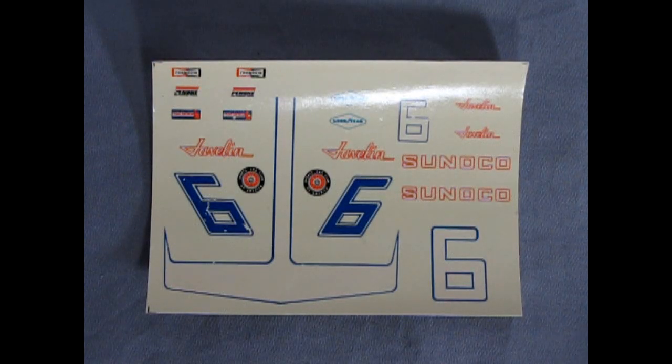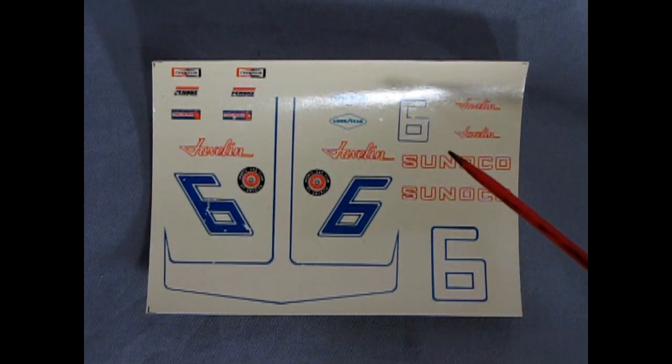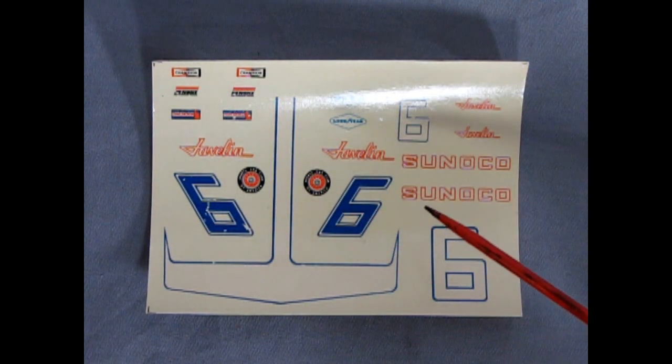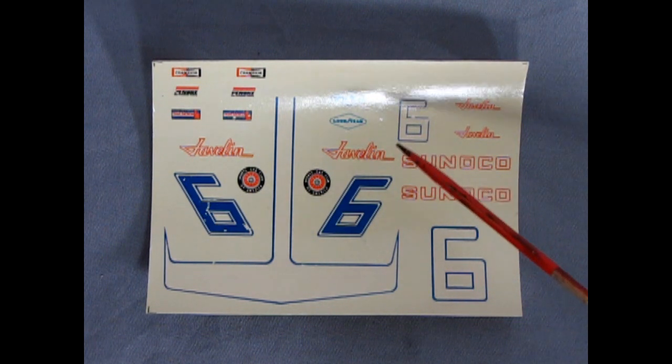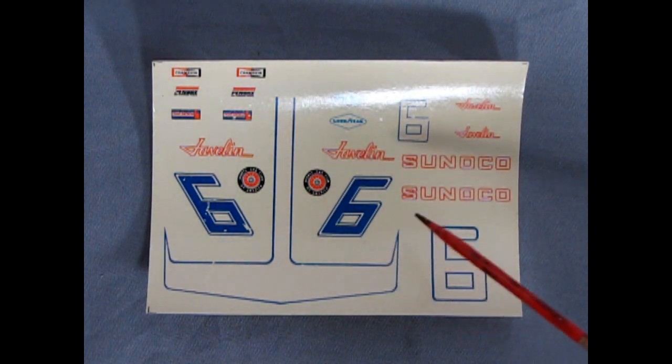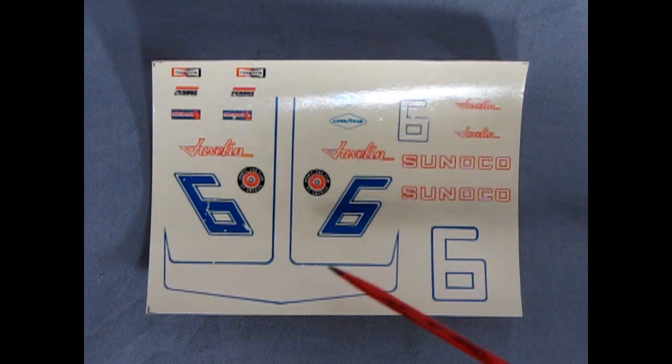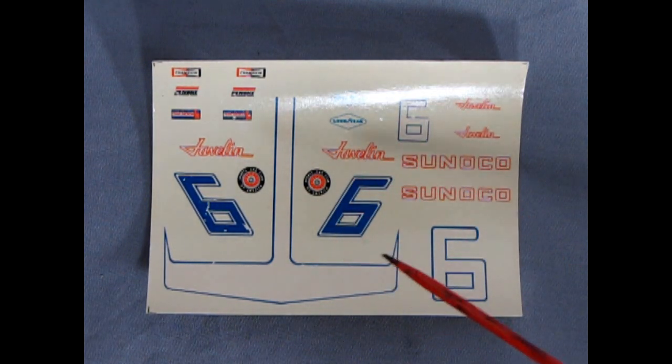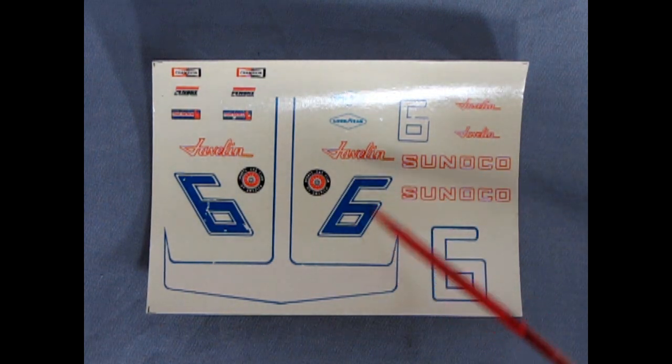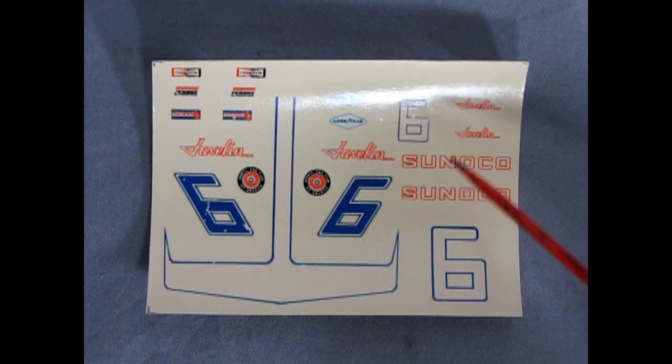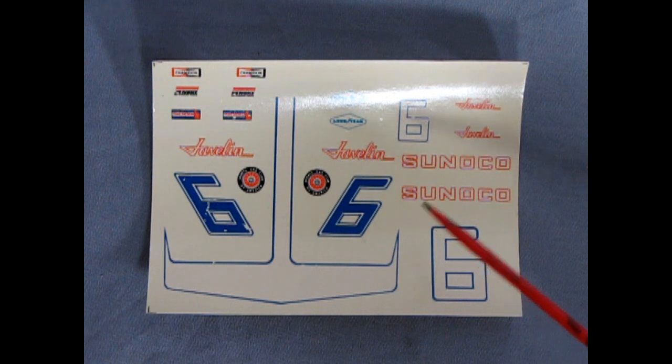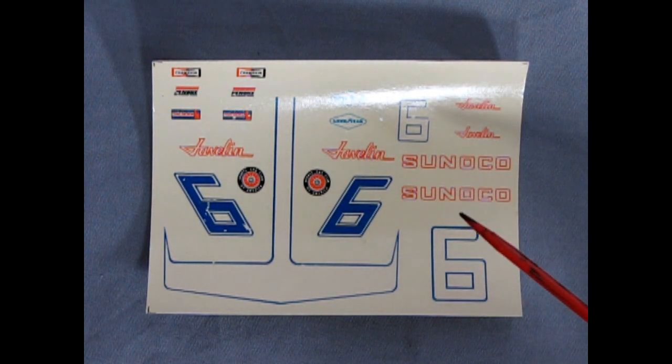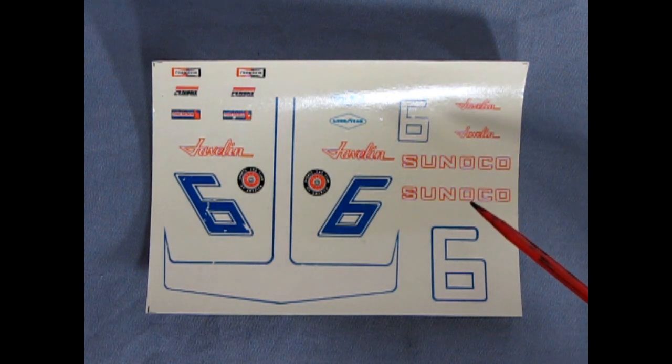Here we have the original decal sheet from 1973 when this kit came out. And as you can see, it has cracked quite a bit. This used the original silk screening process. And of course, with decals that are this old, usually what you want to do is spray paint them with some clear paint, let that dry, and then carefully cut out the decals, put them in the water, and then slide them onto your model. And hopefully they won't crack and crinkle and explode. Because if you don't do that on these, they will. However, I have replaced them with some decals from Fred Cady.